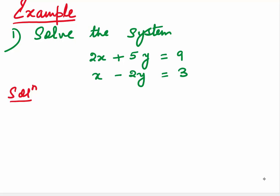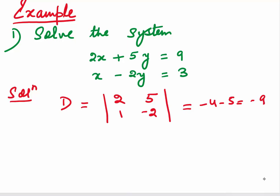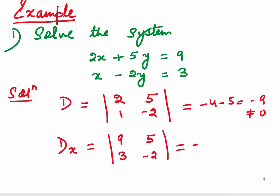Let's do some examples. In the first example, we are given a system in two variables x and y, and we will use Cramer's Rule to solve it. The first thing we do is find the determinant and see whether it is non-zero or not. The determinant value comes out to be minus 9, which is not equal to 0. Next, we form the determinant dx by replacing the coefficients of x by the right-hand side. So 2 and 1 have been replaced by 9 and 3, and we keep the y coefficients as they are. This comes out to be minus 33.